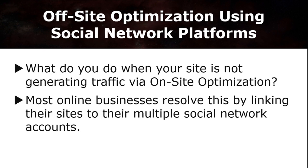For example, you have a post regarding the art of publishing your book, generating views using on-site optimization. However, your traffic is not meeting your expectations. So you want to use the off-site optimization agent by linking your main site to other platforms. Most online businesses resolve this by creating multiple social network accounts — such as Facebook, Instagram, Pinterest, Tumblr, or even Snapchat — which are sometimes more efficient in driving traffic than your sole website.